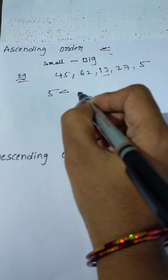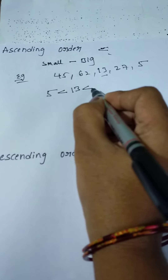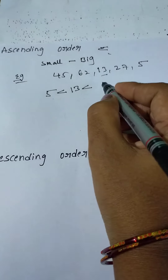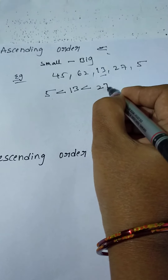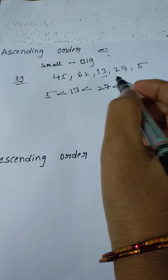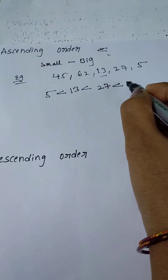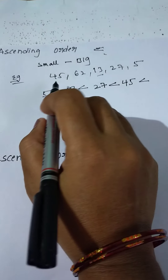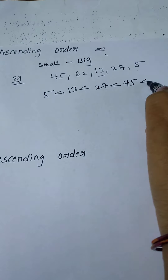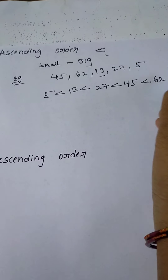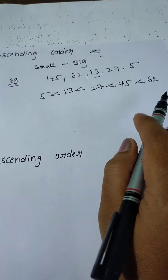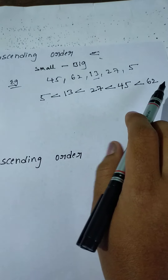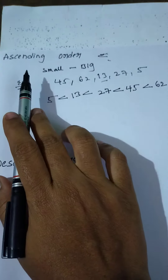So, write 5 first. In this situation, we use less than. So: 5 less than — the next smallest number is 13. So, 13 less than — the next smallest number is 27. Write 27, less than. After, write 45, less than. After, write 62.